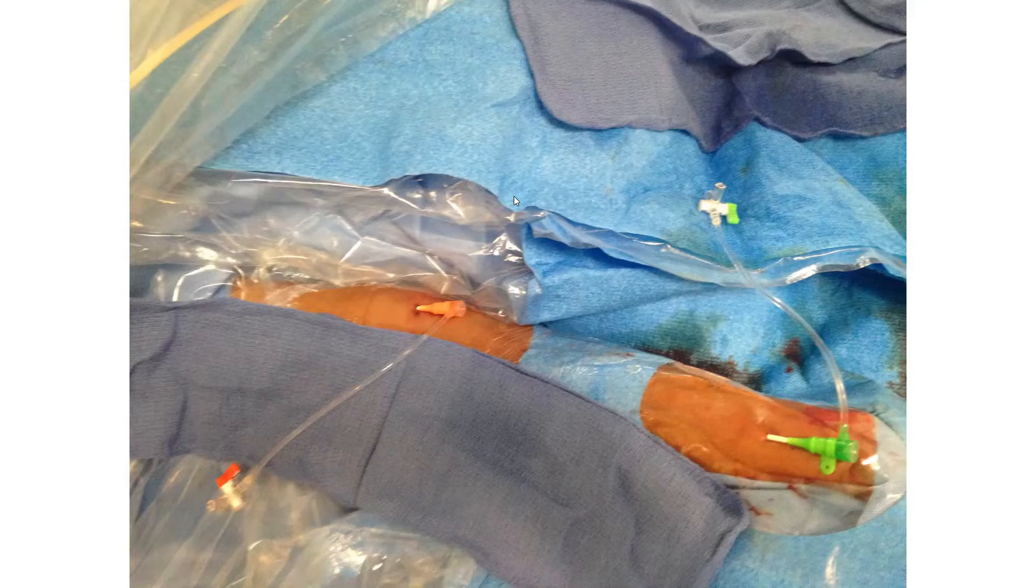And regarding the prep, it's actually very easy. We usually use the same prep and the same drape as the right radial axis and we cut an additional square at the elbow level.